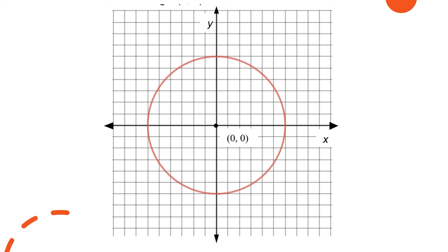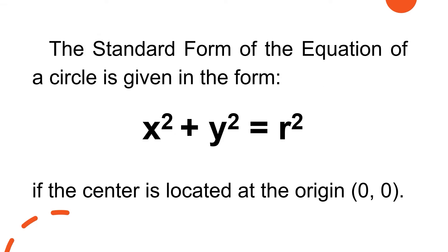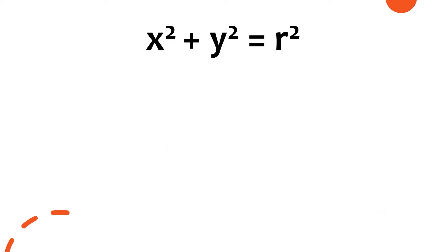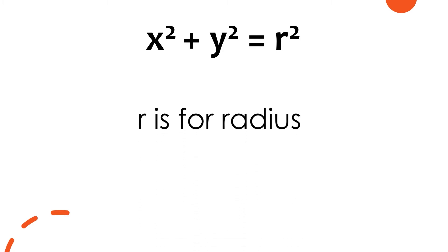Now let's focus on circles whose center is at the origin. If the center of the given circle is at the origin, then its standard form is x² + y² = r², where r² represents our radius.